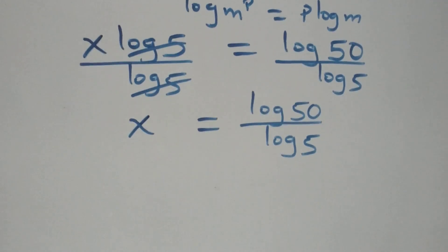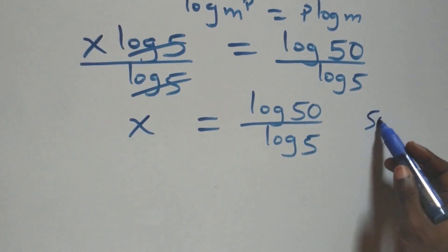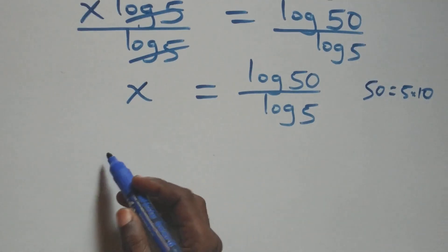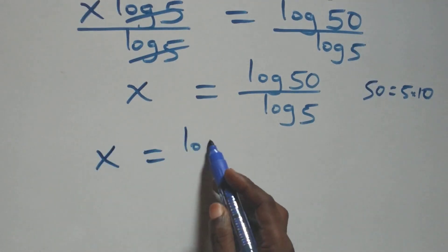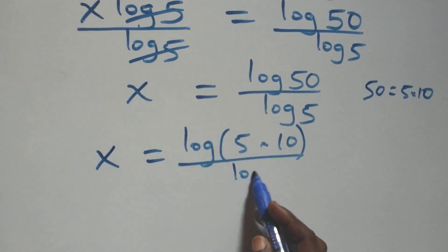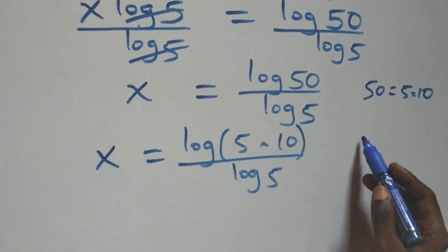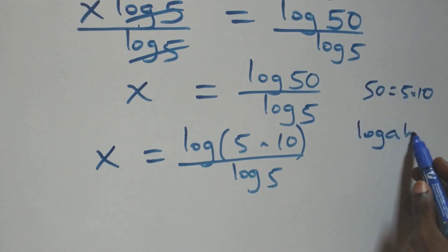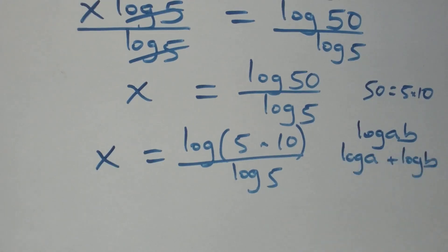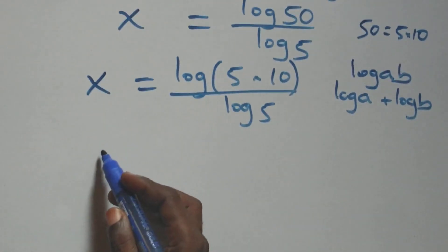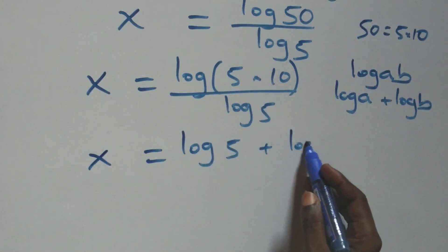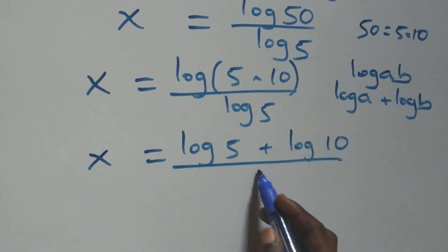Next, we can write 50 as 5 times 10, so this becomes x = log(5×10) / log(5). We then apply the product rule of logarithms, where log(a×b) = log(a) + log(b), giving x = (log(5) + log(10)) / log(5).